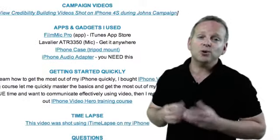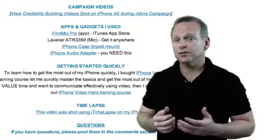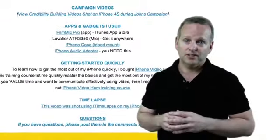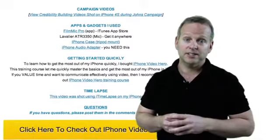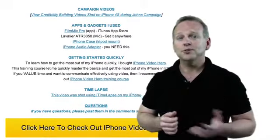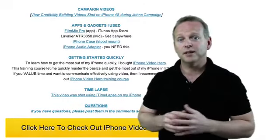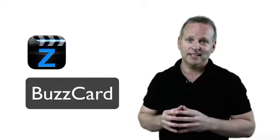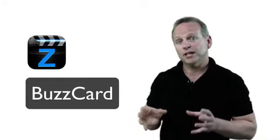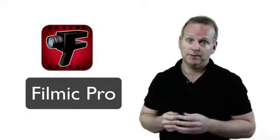Below, I've listed all the accessories I use to shoot effective video using my iPhone 4S. There are numerous video apps out there and the one I used during this campaign was called Filmic Pro. From time to time I use Tilt Shift Video, iTime Lapse, and I'm currently experimenting with Buzzcard. But for John's campaign shoot, I used Filmic Pro.